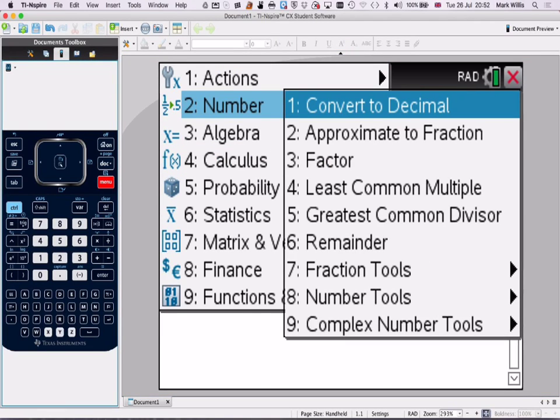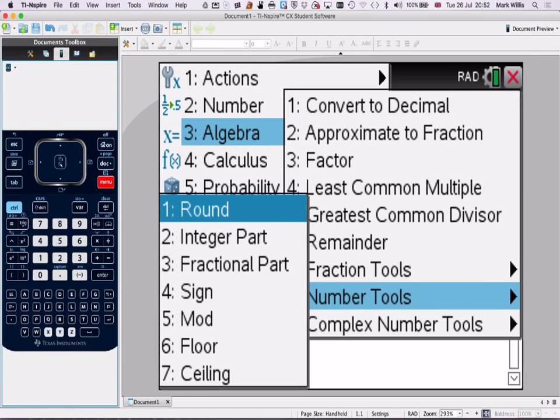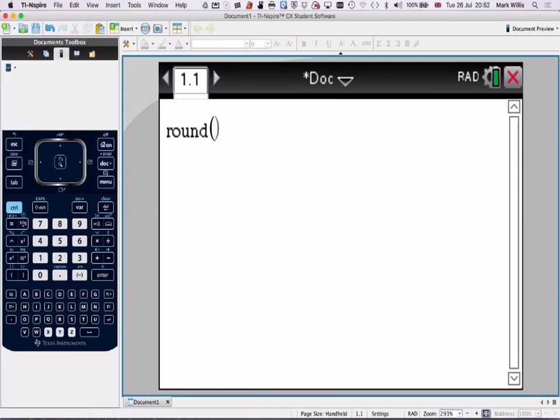which is number. Then go to number 8, and then go to number 1, which is round. That will appear on your screen.